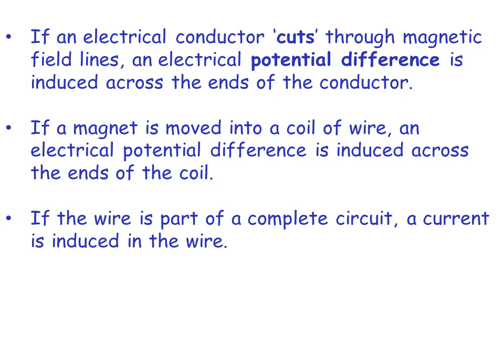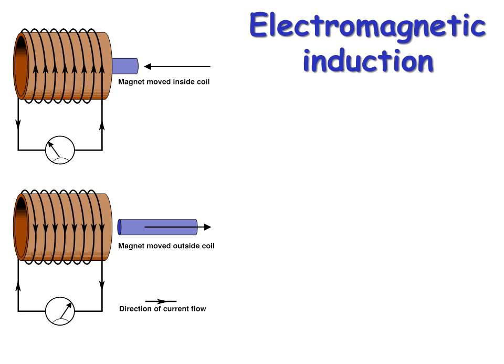This is how all power stations generate electricity, with the exception of solar power. They all turn a turbine to turn a big generator, which is a coil of wire, and a magnet moving relative to each other.